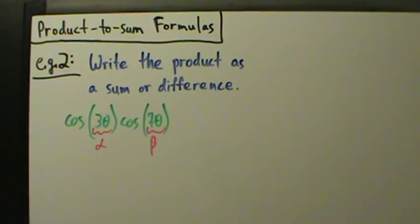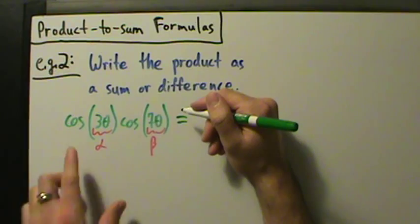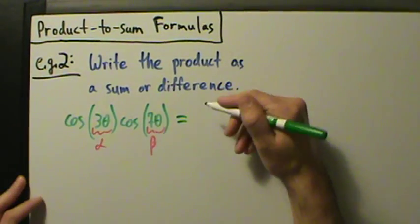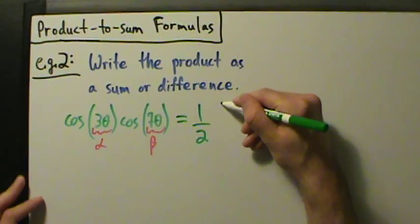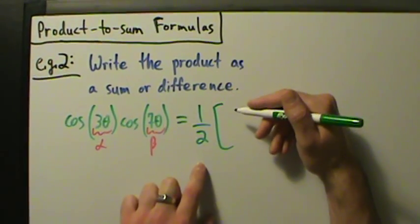We're really just plugging numbers into the formula, or numbers and variables and thetas into the formula for now. Then we'll simplify and see what else needs to be done, if anything. So this is 1/2 times